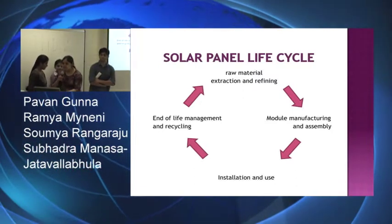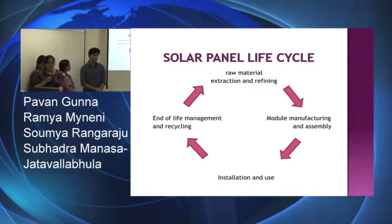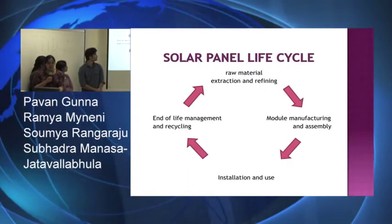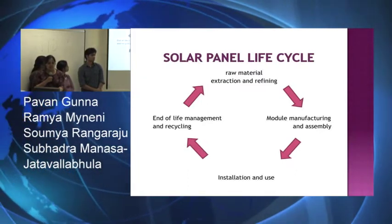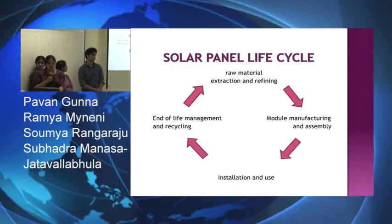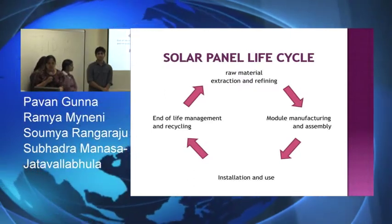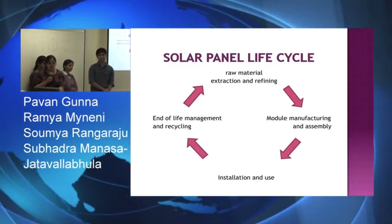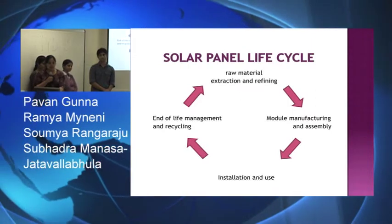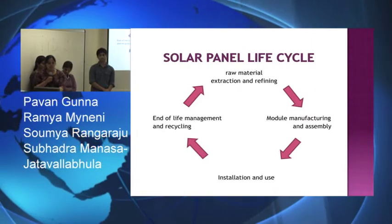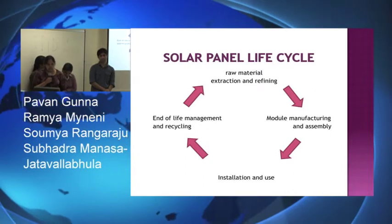The figure shows the life cycle of a solar panel. It starts with collecting and refining the raw material. Then we manufacture and assemble the material as required. Then we use it, and after the life of the solar cell, we recycle them.